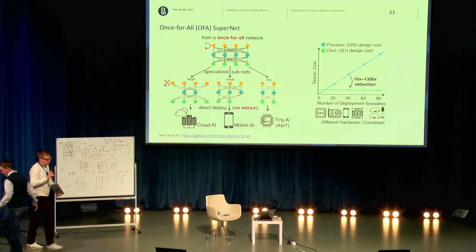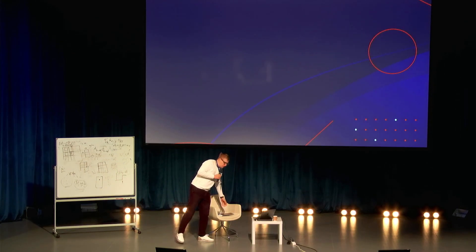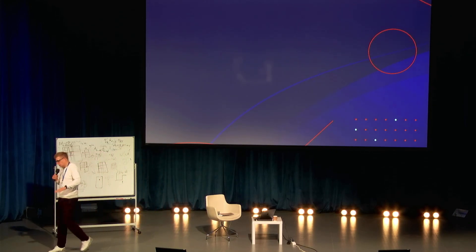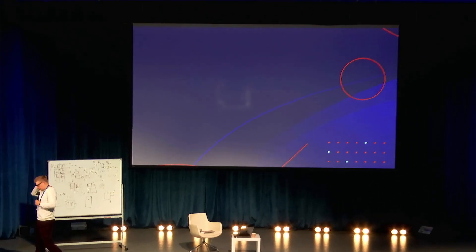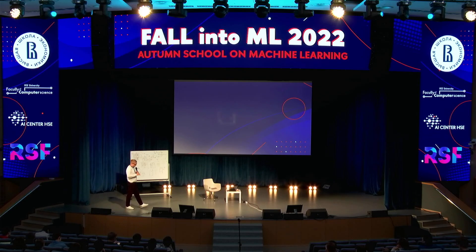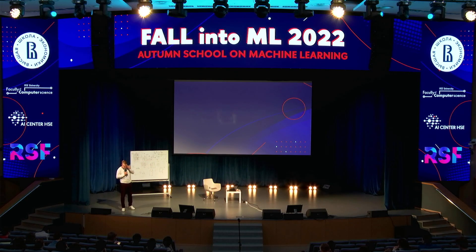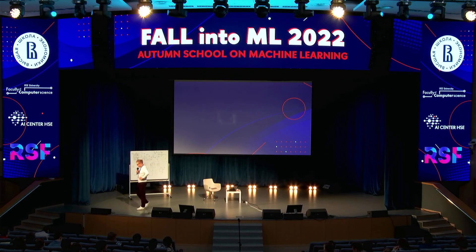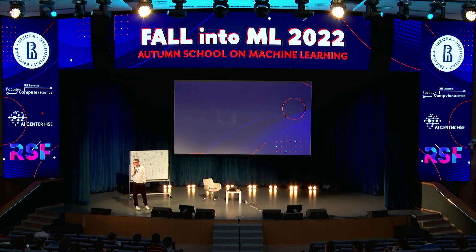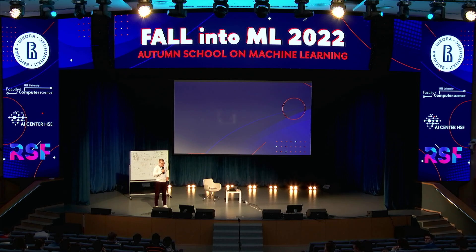Closing announcements: We meet tomorrow at 10 o'clock for two lectures — first by Evgeny Burnaev on optimal transport and generative modeling based on stochastic processes, and after lunch a lecture by Dmitry Vetrov also about generative modeling. At the end of the day there will be applications of machine learning in physics, with talks about applications in astrophysics. Please come — these are very modern and active research topics.